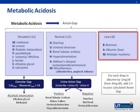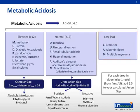Finally, among the causes of low anion gap metabolic acidosis, the most clinically relevant is multiple myeloma. Remember that for each drop in albumin by 1 mg per deciliter from 4 mg per deciliter, you should add 2.5 to your calculated anion gap.